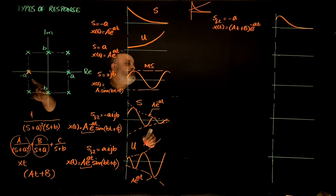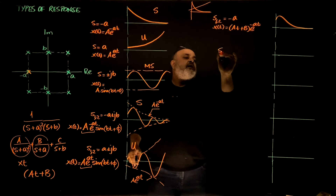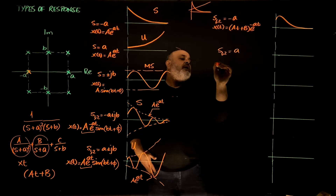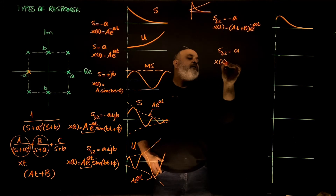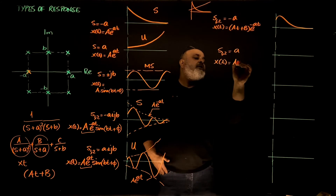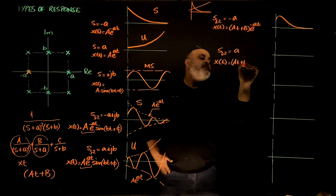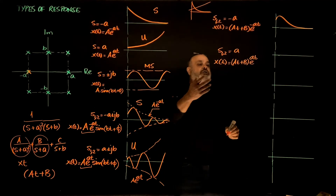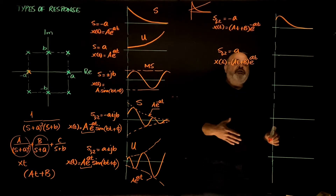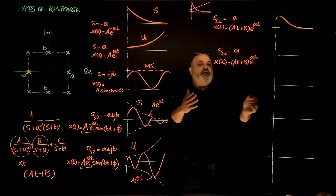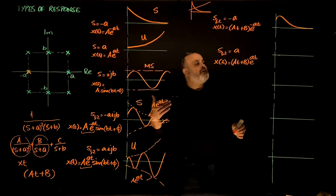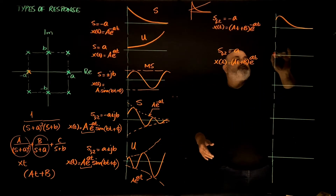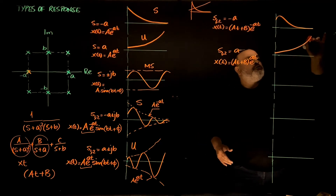What about a double positive real root? Then x(t) has amplitude a·t plus b multiplied by e to the power a·t. Both the linear term and the exponential grow to infinity, so multiplying two things going to infinity results in something going to infinity even faster. We still have an exponentially growing response, so this is unstable.